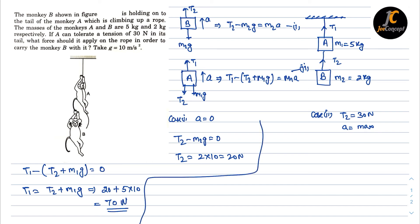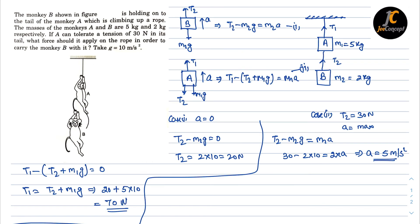In case two, T2 equals 30 newtons and acceleration is unknown. From equation one: 30 minus 2 times 10 equals 2 times a, giving acceleration equals 5 meters per second squared. This is the maximum acceleration with which both monkeys move upward, constrained by T2 = 30 newtons. Now we can find T1.